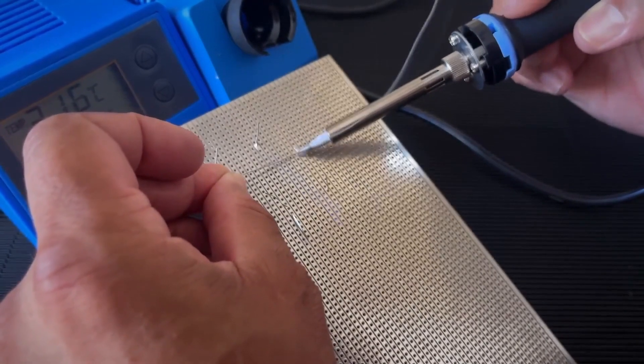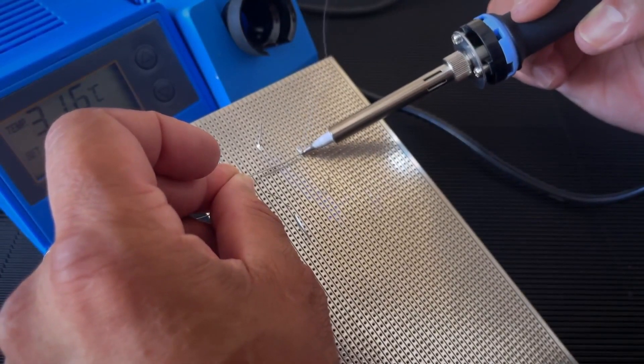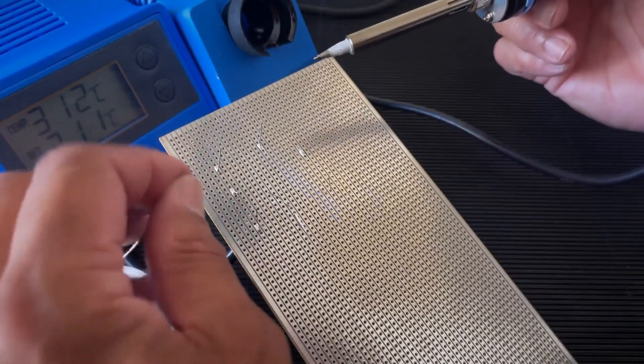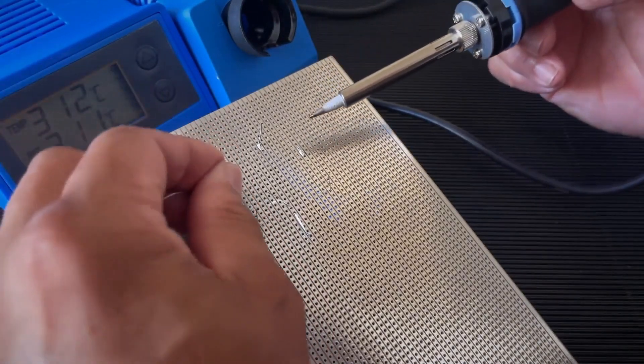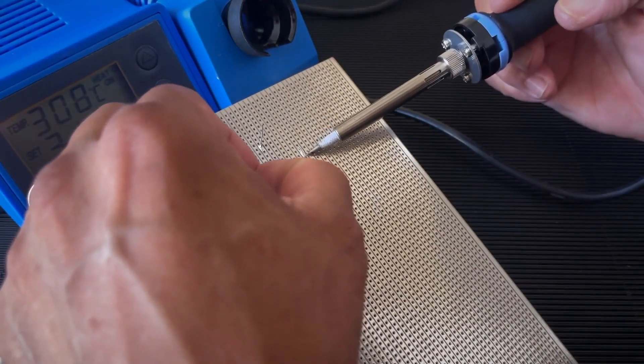There are solutions for that though, but let's just carry on with some more soldering and you can see if it struggles to take, it could be anything - dirty track, little dust on it. It could be that the tip is not hot enough.